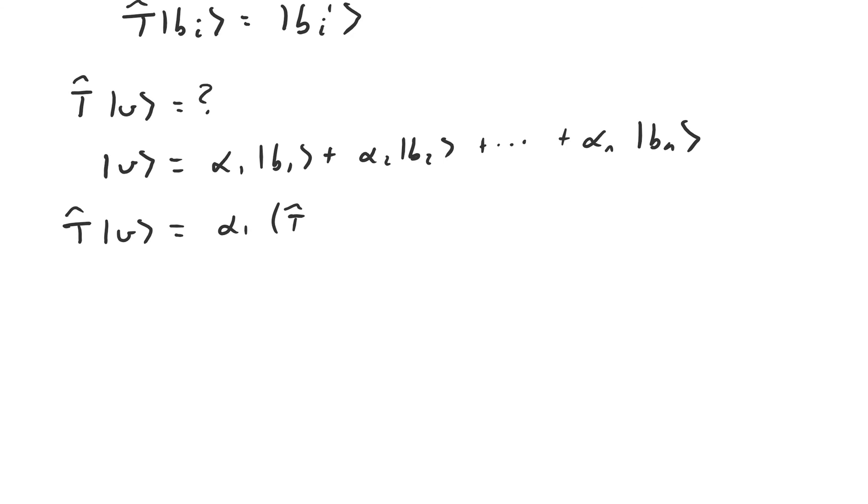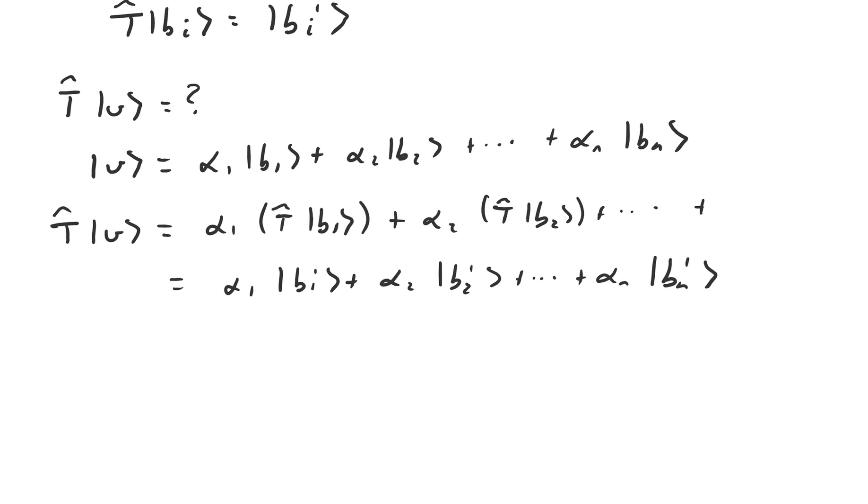So when T̂ acts on |v⟩, we'll get α₁|b'₁⟩ + α₂|b'₂⟩ + ... + αₙ|b'ₙ⟩. This is the vector that |v⟩ transforms into after being operated on by T̂. Since |v⟩ was an arbitrary vector in this space, we know how T̂ will transform any vector in this vector space just by knowing how T̂ transforms the basis vectors. This is why this property of linearity is so important.